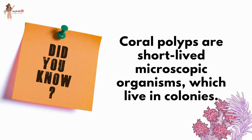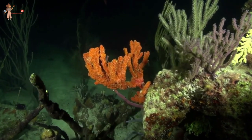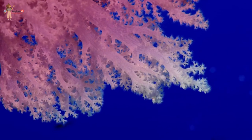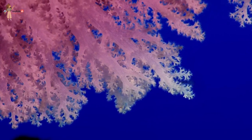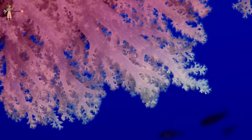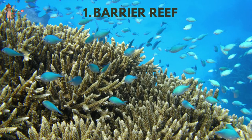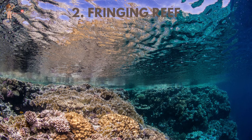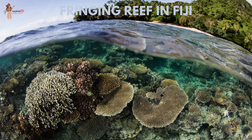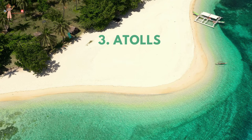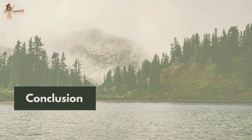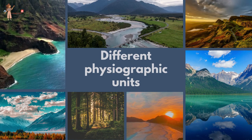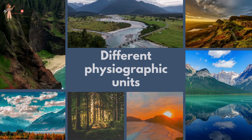Coral polyps are short-lived microscopic organisms that live in colonies. They flourish in shallow, mud-free and warm waters. They secrete calcium carbonate, and the coral secretions and skeletons form coral deposits in the form of reefs. There are mainly three kinds: Barrier Reefs — for example the Great Barrier Reef of Australia — Fringing Reefs, and Atolls, which are circular or horseshoe-shaped coral reefs.